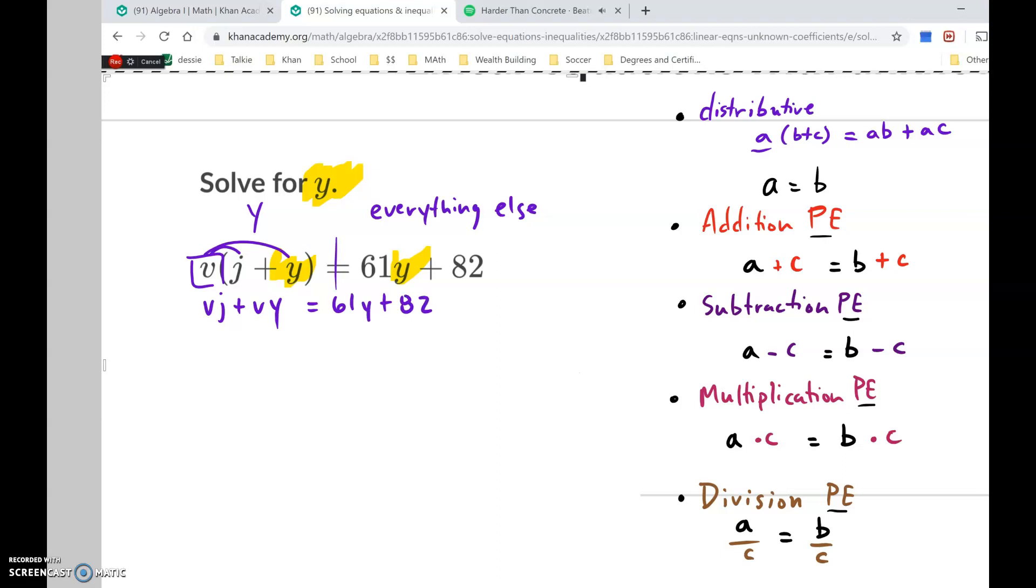Now we have to eliminate this y term on the everything else expression. And since it's positive, I'm going to do the inverse. The inverse here would be subtract because it's positive. So I'm going to subtract that to both sides. We'd have vj plus vy minus 61y equals 61y minus 61y plus 82. So I've just subtracted the 61y to both sides. I've used this property correctly. And I can simplify this. 61y minus 61y, that's zero. That's gone.